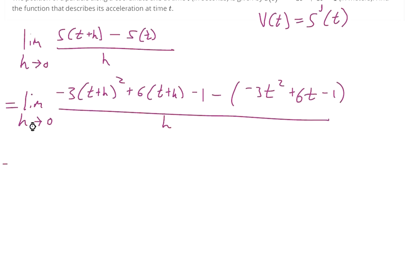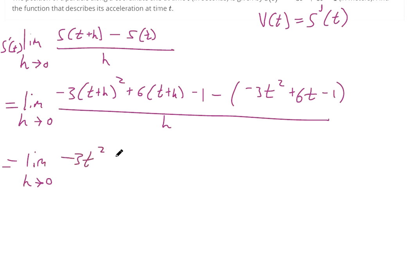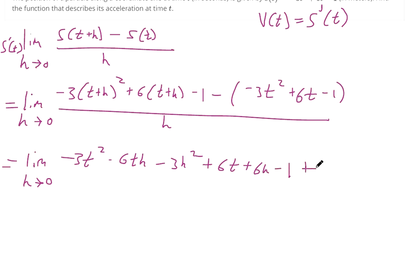We have a divide by zero problem, but remember what we're finding here — this is s prime of t, the derivative, and we're saying we want the derivative for every single point, so we're finding the velocity. The algebra here might take a little bit. Expanding: that's negative 6th minus 3h squared — I did t plus h times t plus h and multiplied by negative 3. Then using the distributive property: that's 6t plus 6h minus 1. And then plus 3t squared minus 6t plus 1, distributing that negative sign.